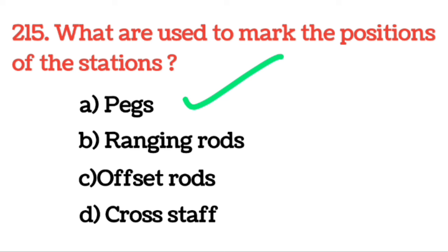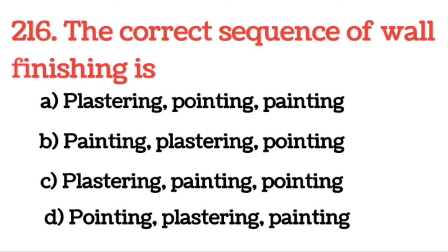Next question: The correct sequence of wall finishing is? Answer: Pointing, plastering, and painting. Wall finishing जो हम करते हैं, first of all we do pointing, then we do plastering, and then we do painting. So the wall finishing sequence is: pointing, then plastering, then painting.